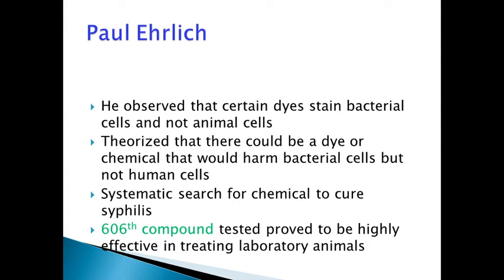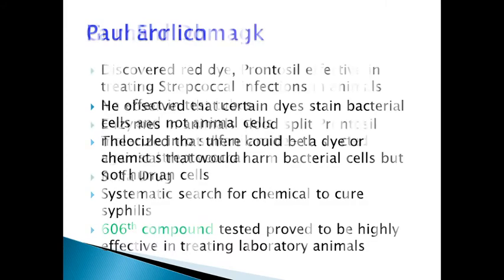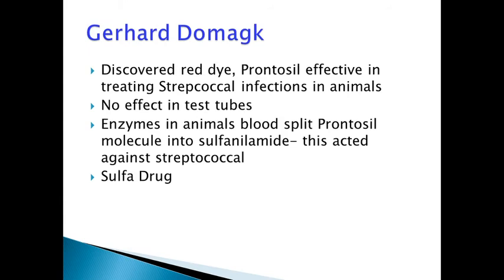You can relate this with the antiviral drugs against COVID-19 — it has been six months and there are very few chemicals that can be given as a sure-shot remedy for COVID-19. Then comes Gerhard Domagk. He discovered a red dye named Prontosil which was effective in treating streptococcal infections in animals, but this dye showed no effect in a test tube. It was theorized that enzymes in animal blood split the Prontosil molecule into sulfanilamide, which acted against streptococcal bacteria, and thus sulfa drugs were discovered.